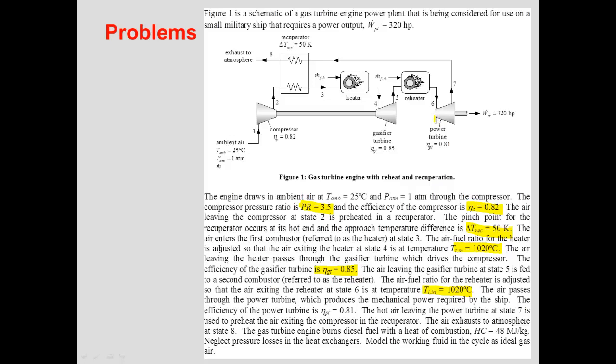The air then passes through the power turbine. We don't know the mass flow rate, but it is such that the net power output is 320 HP. The turbine efficiency is 0.81. We leave state 7 and the air passes through the recuperator. The burning fuel is diesel, which has a given heating value.